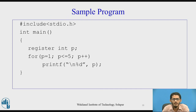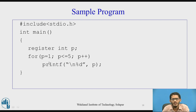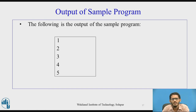In a sample program, a variable p is declared with register storage class and data type integer. When we execute a loop and display its values, the output is similar to a normal integer variable — the output is 1, 2, 3, 4, and 5 as expected.